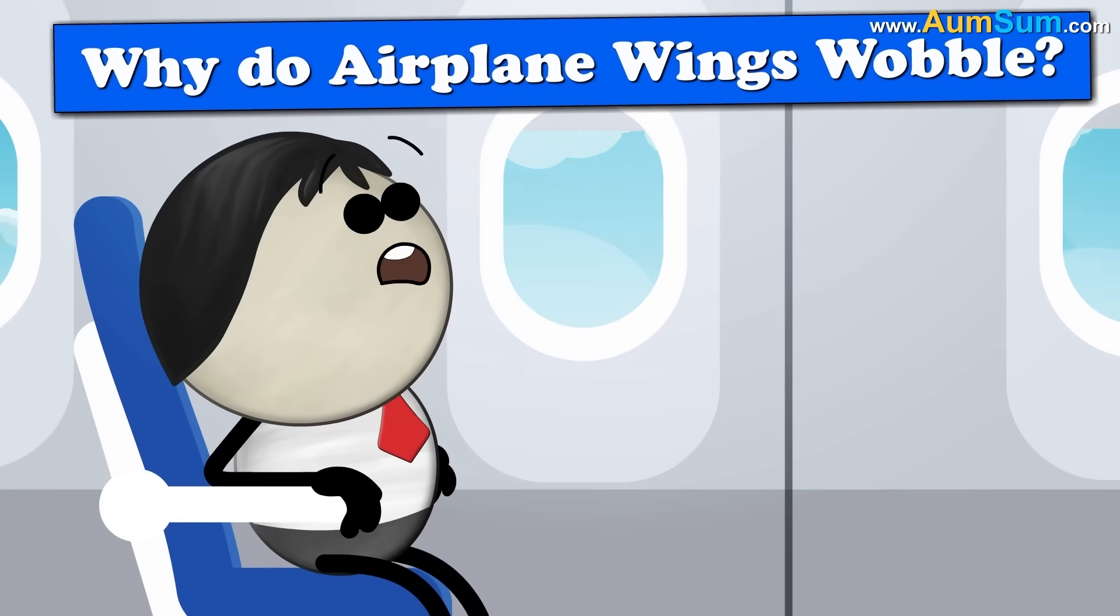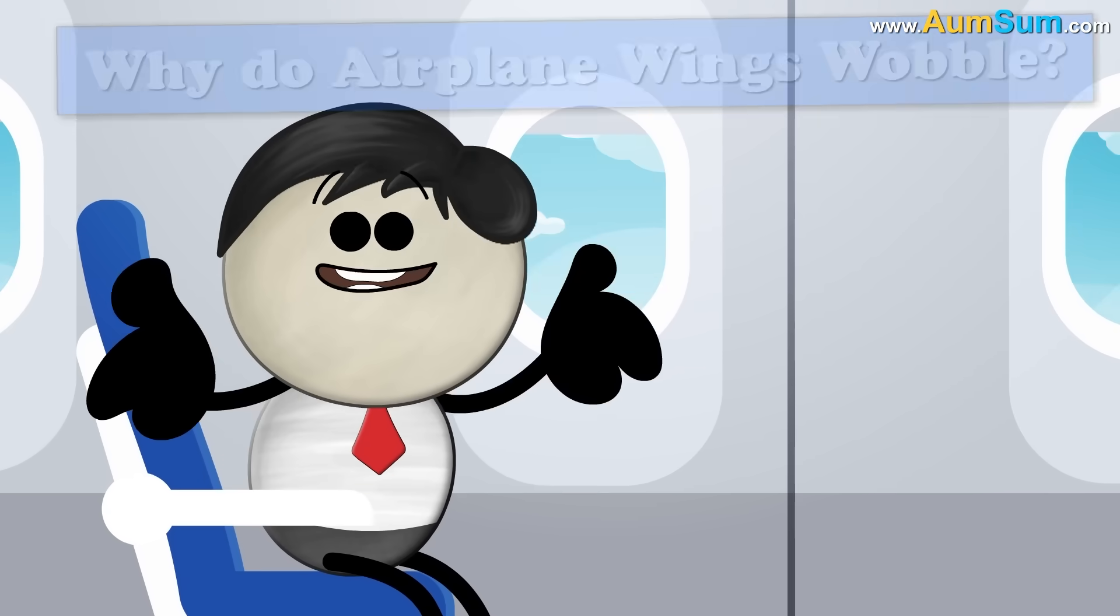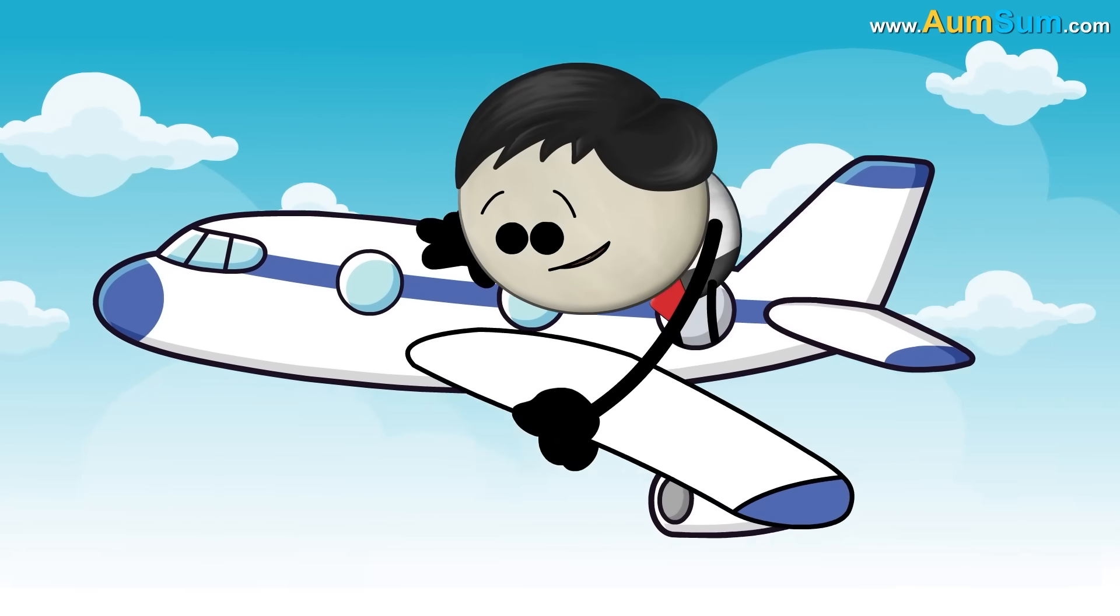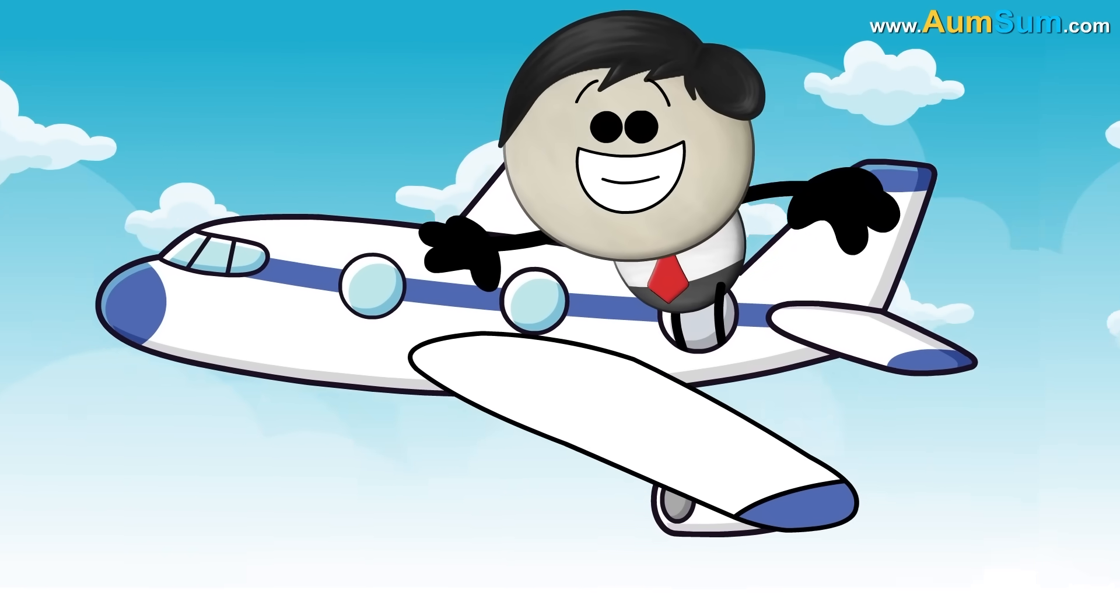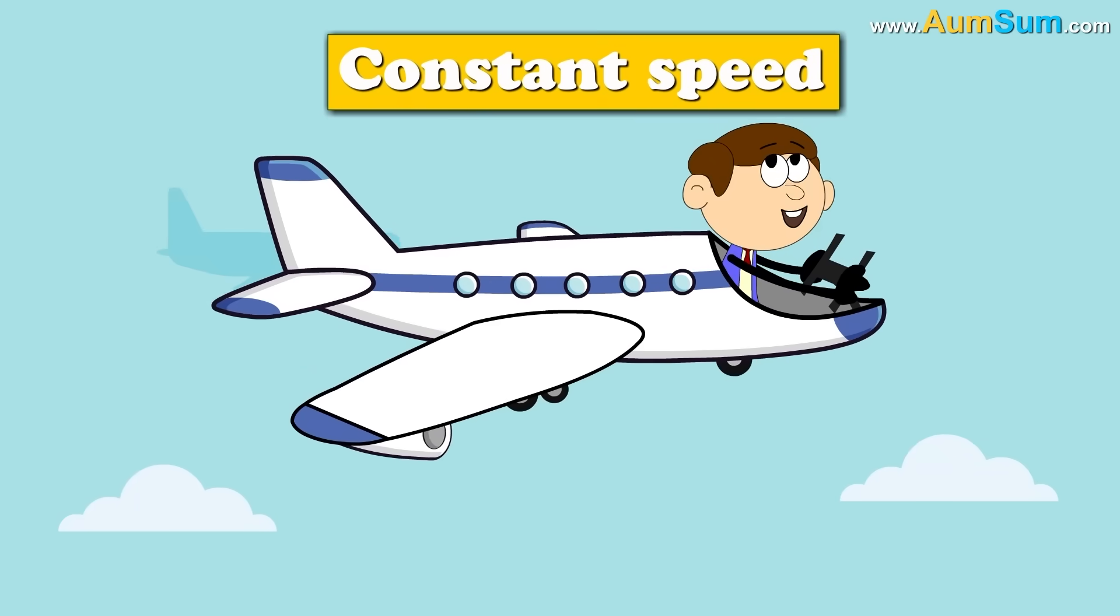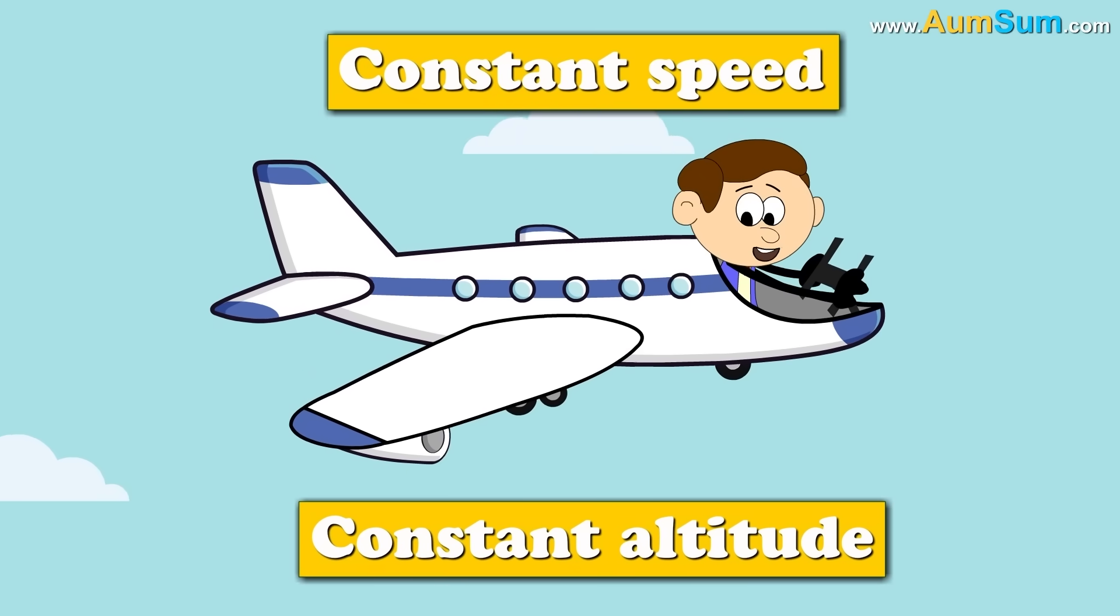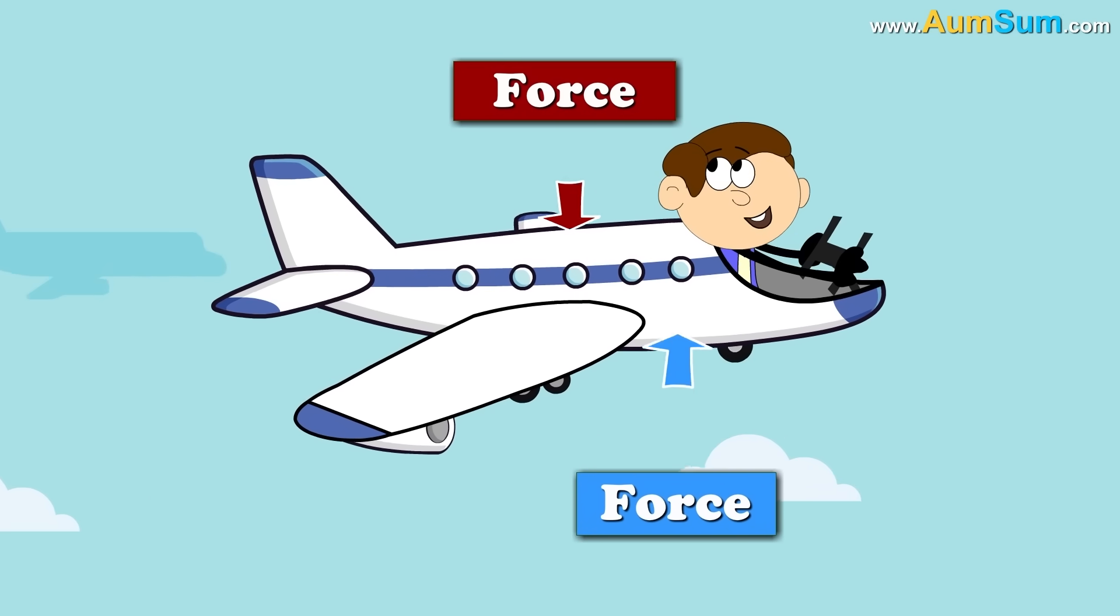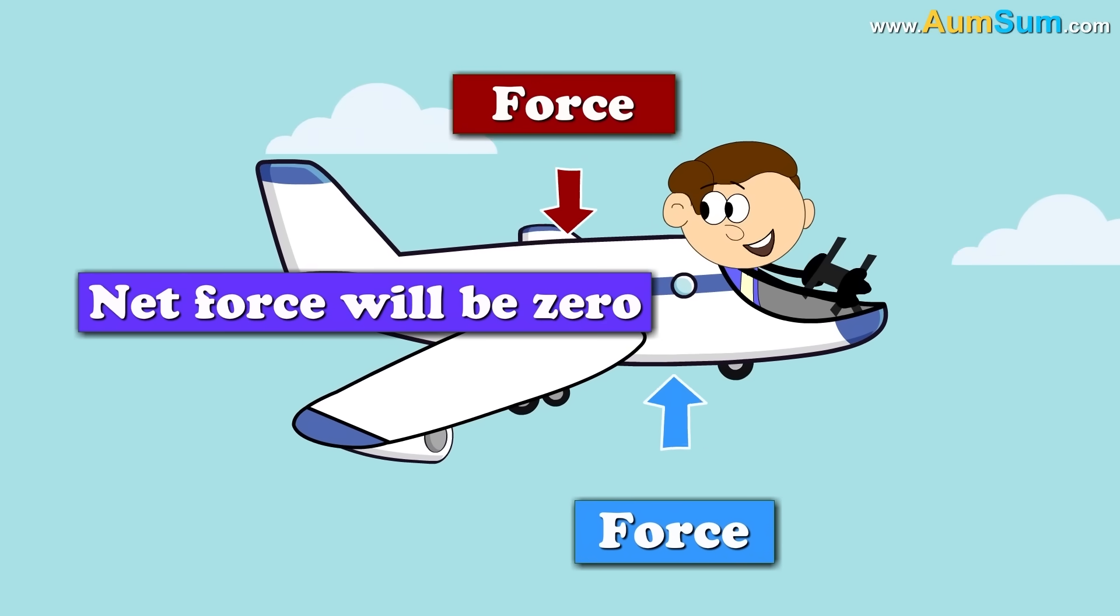Why do airplane wings wobble? Simple. Because I keep on shaking them. When an aircraft is flying at a constant speed and at a constant altitude, then the same amount of force will be pushing it up as well as down. As in the net force will be zero.